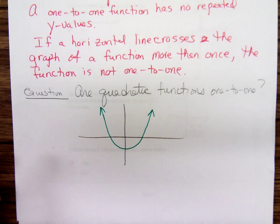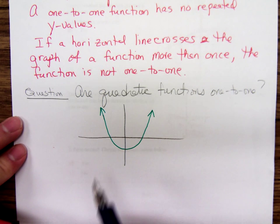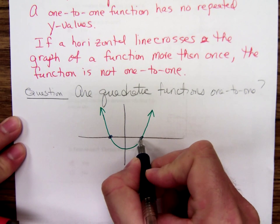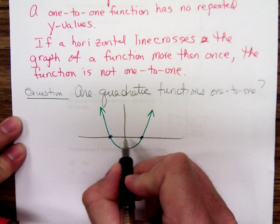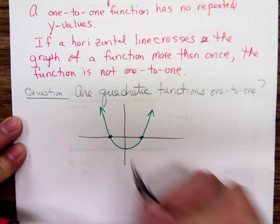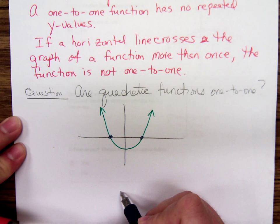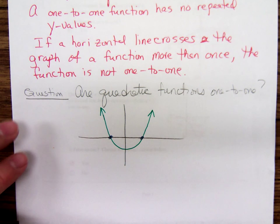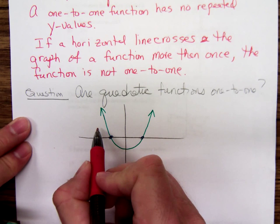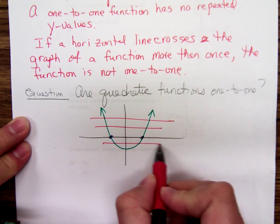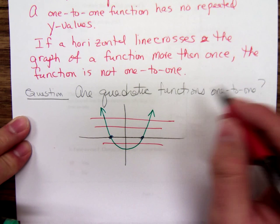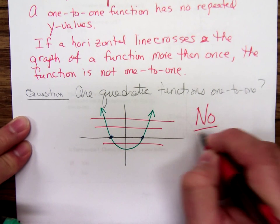Is this a one-to-one function? Right here are two points with the same y-value, if we think of this as the x-axis and the y-axis. Does this pass the horizontal line test? No. You can certainly draw horizontal lines that intersect it more than once. Quadratic functions are not one-to-one.